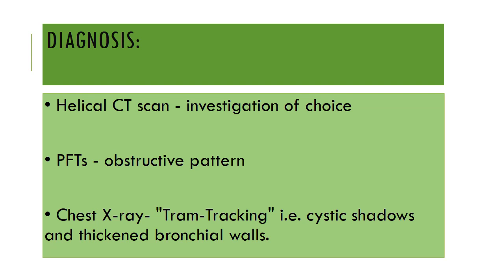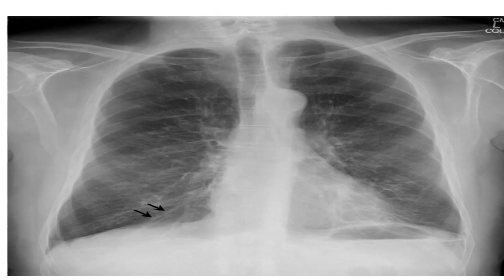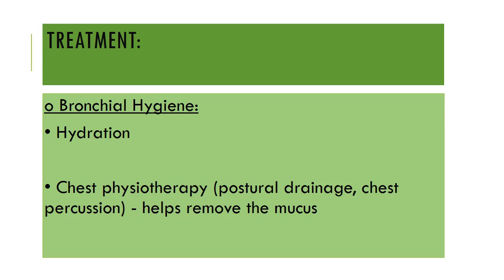The chest X-ray will show tram tracking appearance, which includes cystic shadows and thickened bronchial walls. In this chest radiograph, you can clearly appreciate the thickened bronchial wall pointed by two arrows, and it is known as tram tracking appearance.